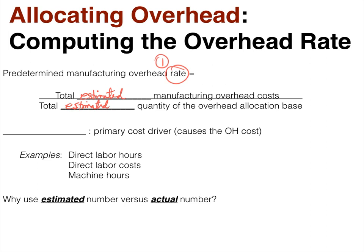We have to determine what an allocation base is, and this could be different for different companies. An allocation base is what's driving your cost. If a company is entirely automated, machine hours might be a good cost driver. If a company is more labor intensive, then either direct labor hours or direct labor cost may be a good option.